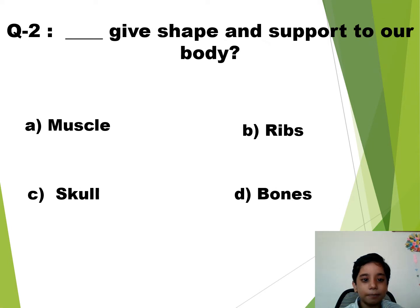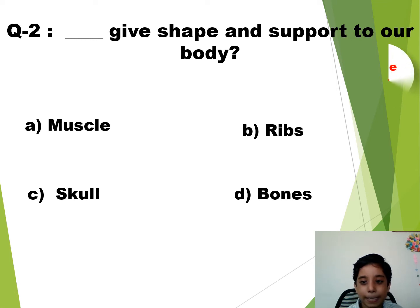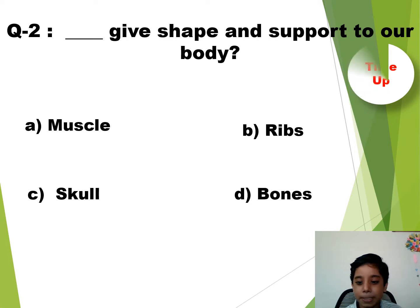Question number 2. You dash — given shape and support to our body. The time starts now. Time up. So the answer is D — Bones.